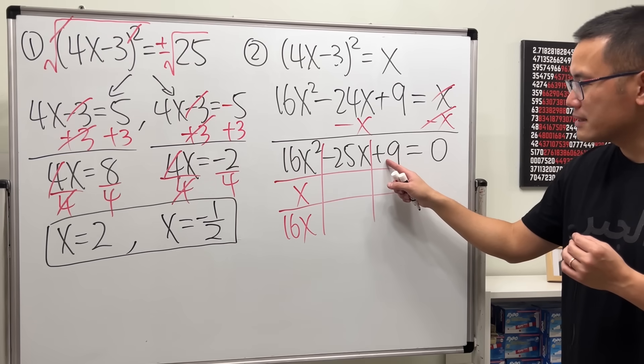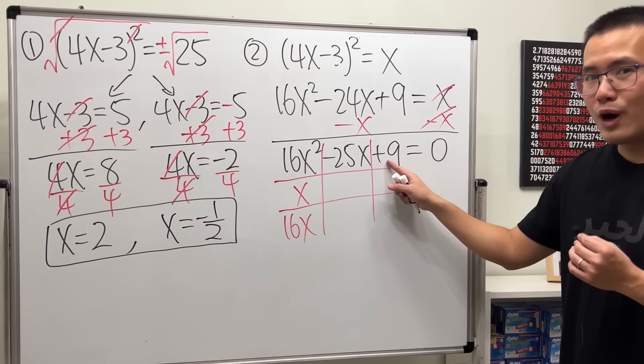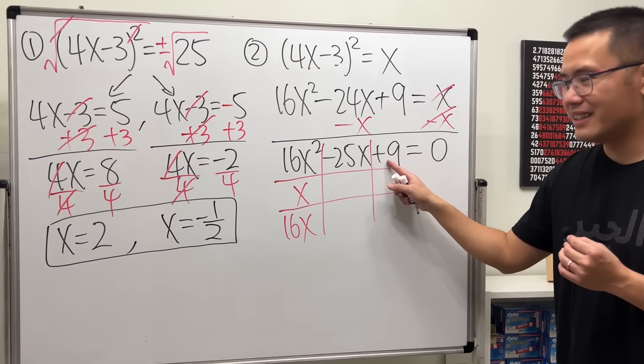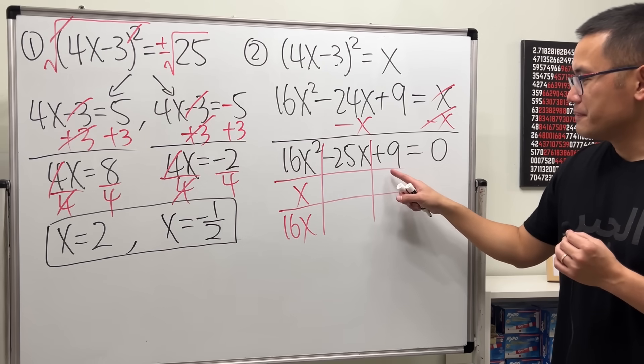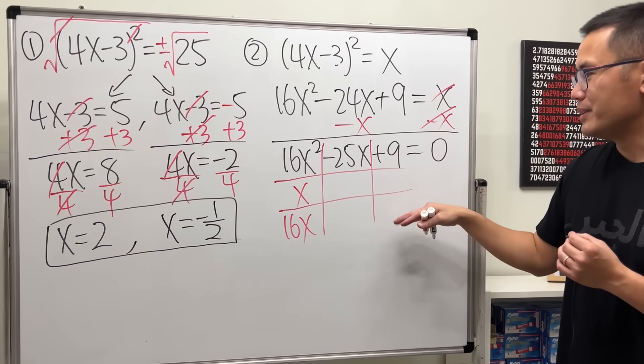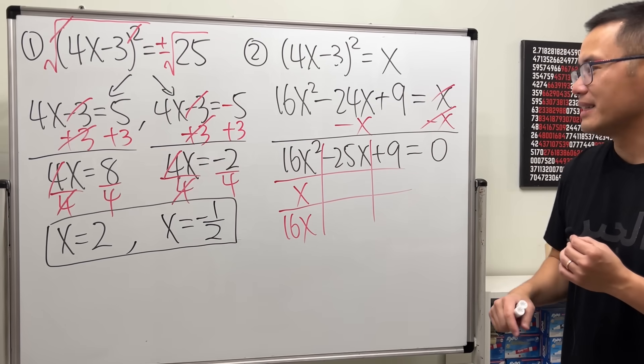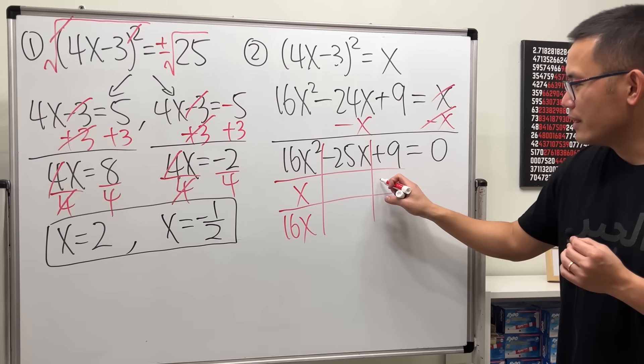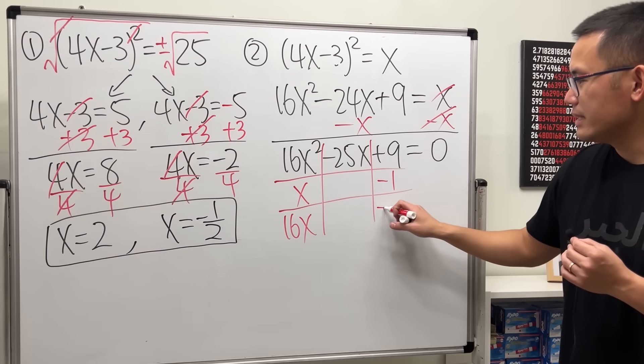Now, to get positive 9, we need negative 1 and negative 9. Right? Not negative 3, negative 3. Negative 1 and negative 9.